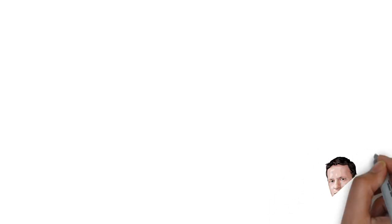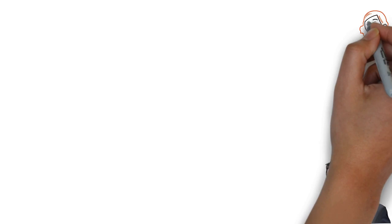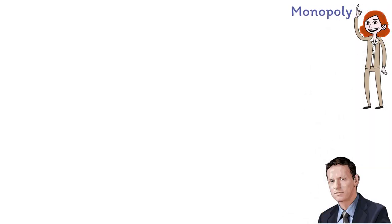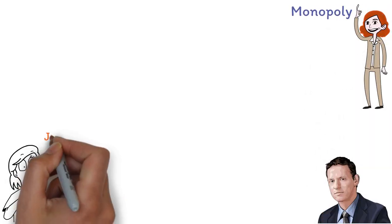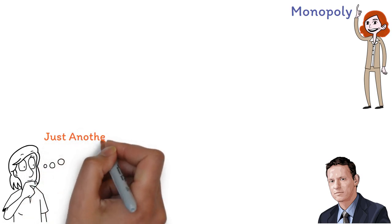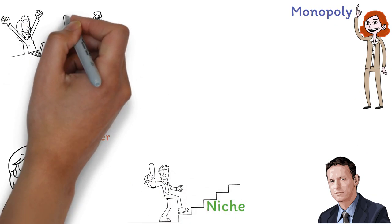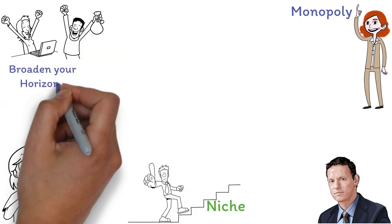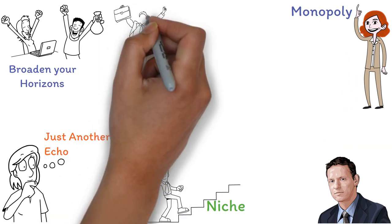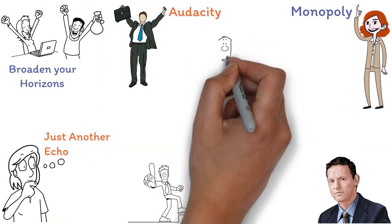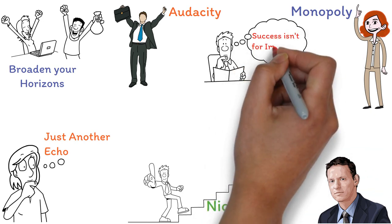In conclusion, Peter Thiel suggests that to thrive as an entrepreneur, you should aim to carve a monopoly. Start with a unique vision, ensuring your business stands out and isn't just another echo. Begin in a niche, delivering unparalleled value. Once you've gained dominance, broaden your horizons. However, success demands audacity. Dare to defy norms, for true success isn't for imitators.